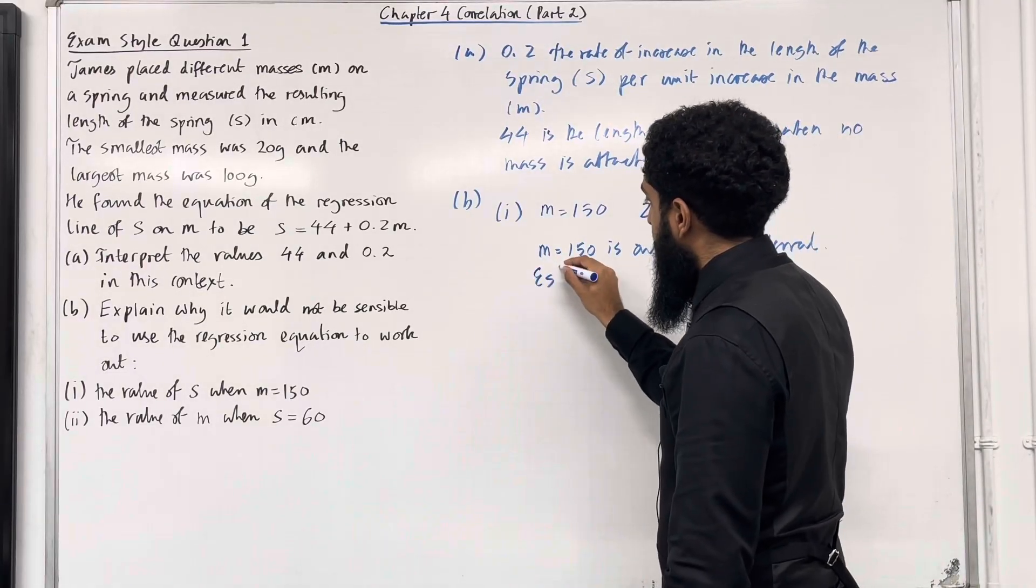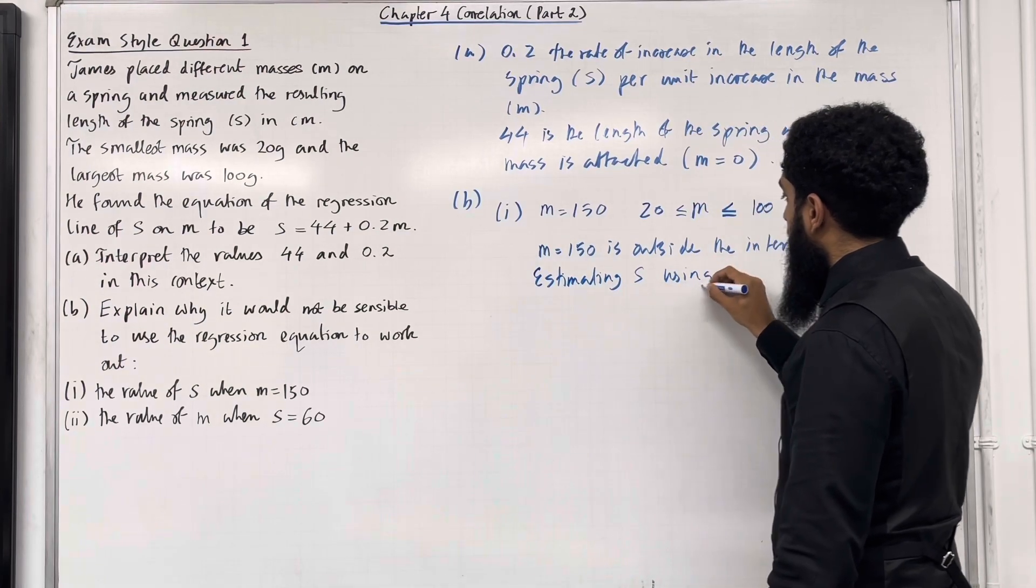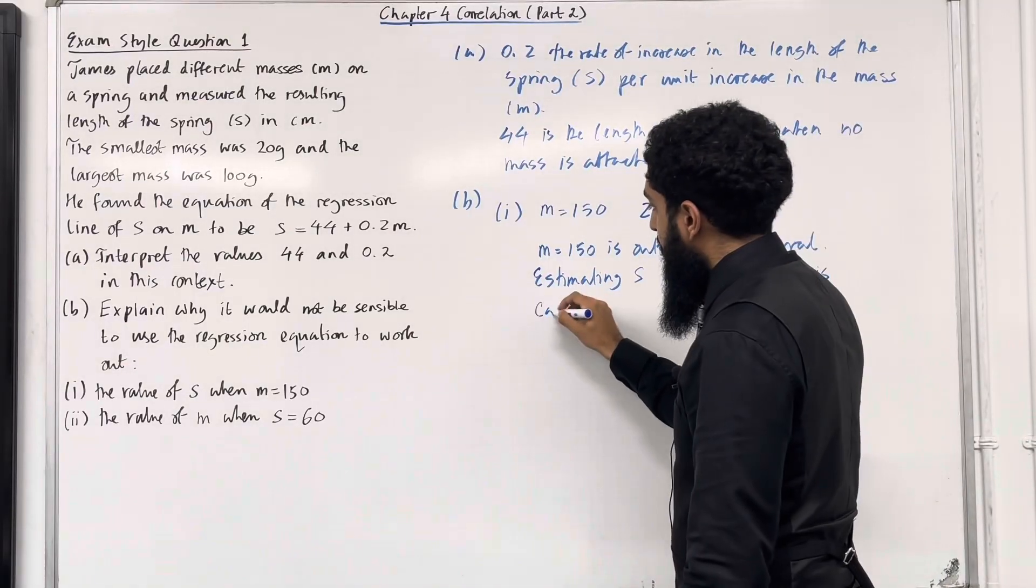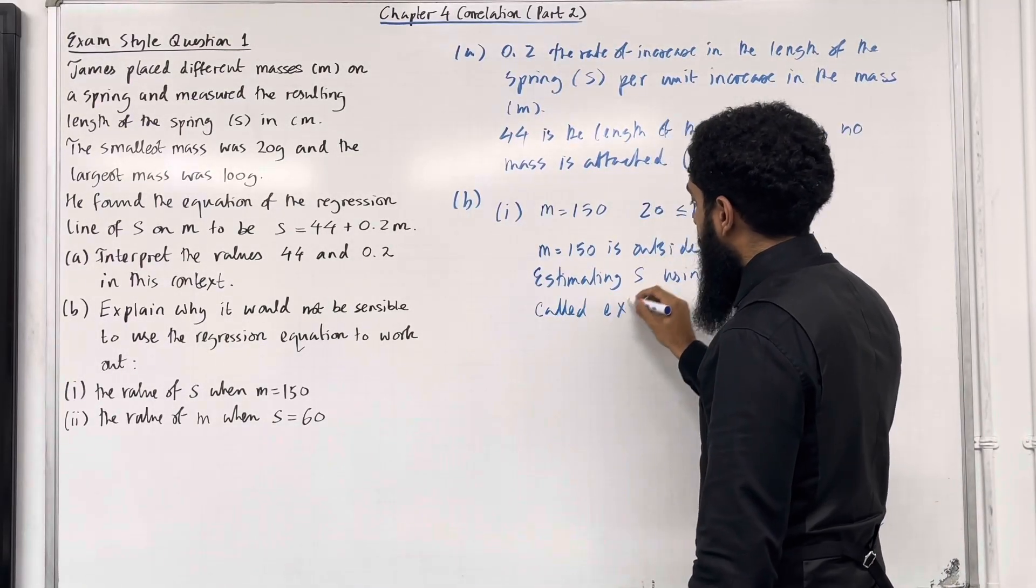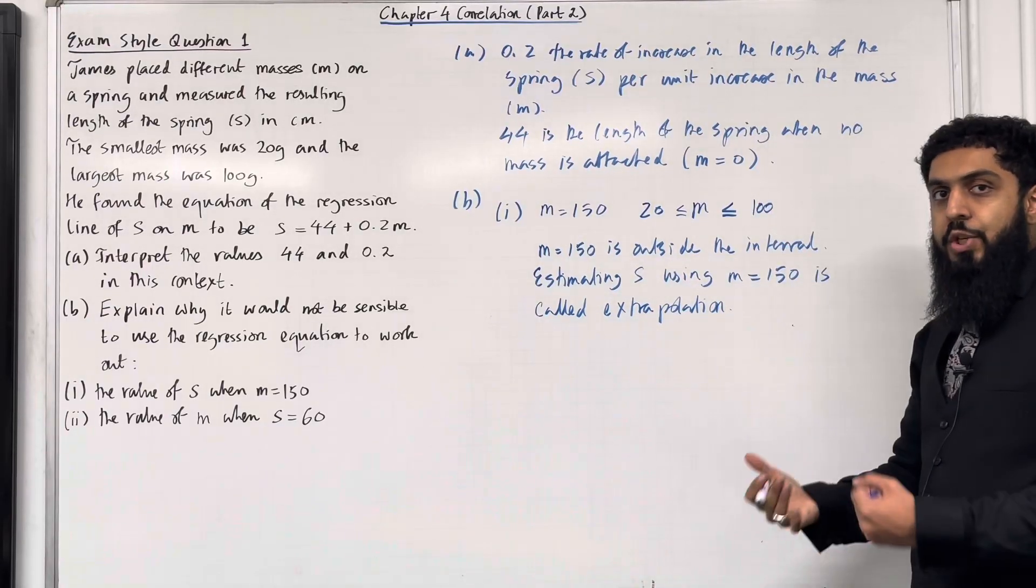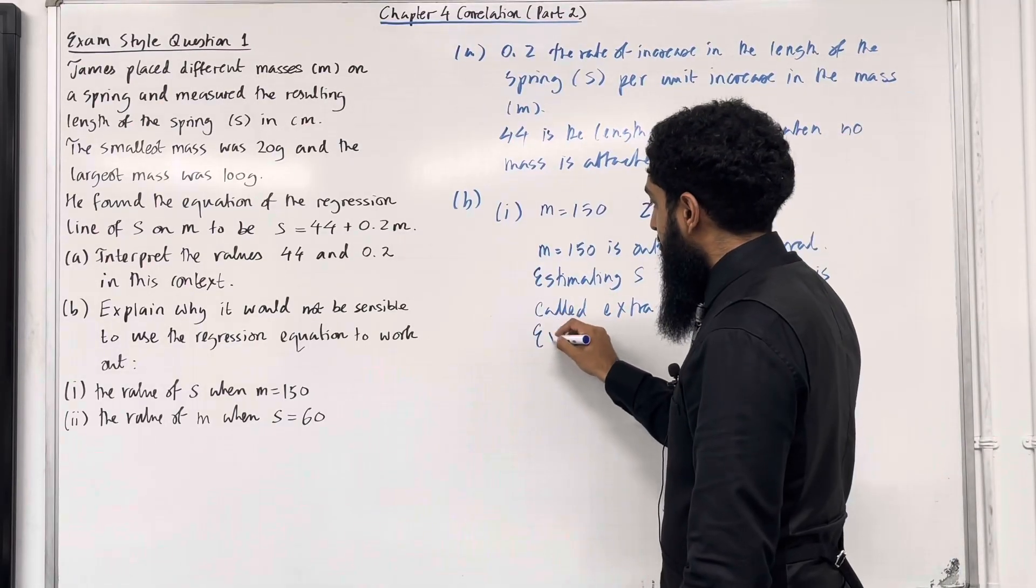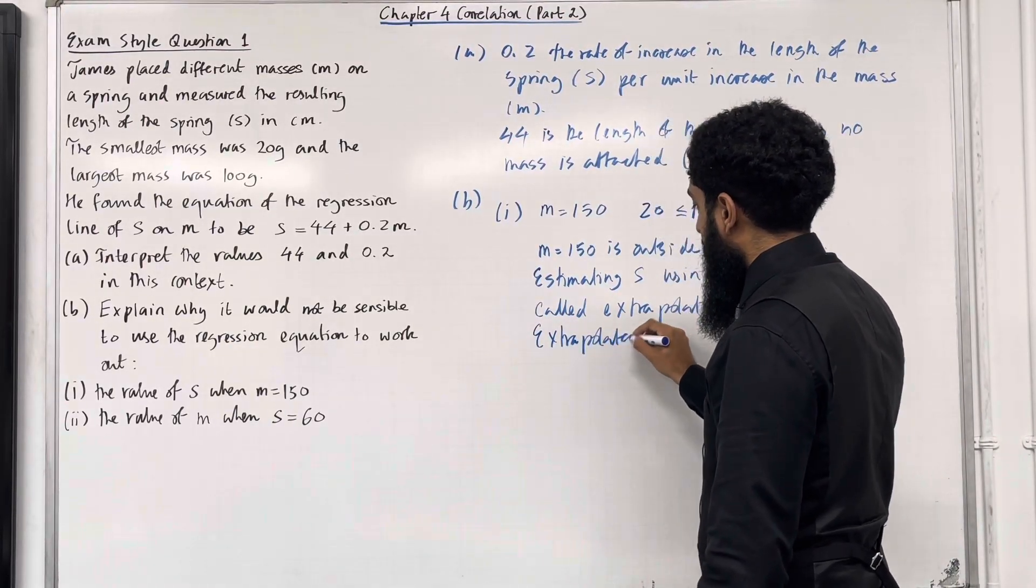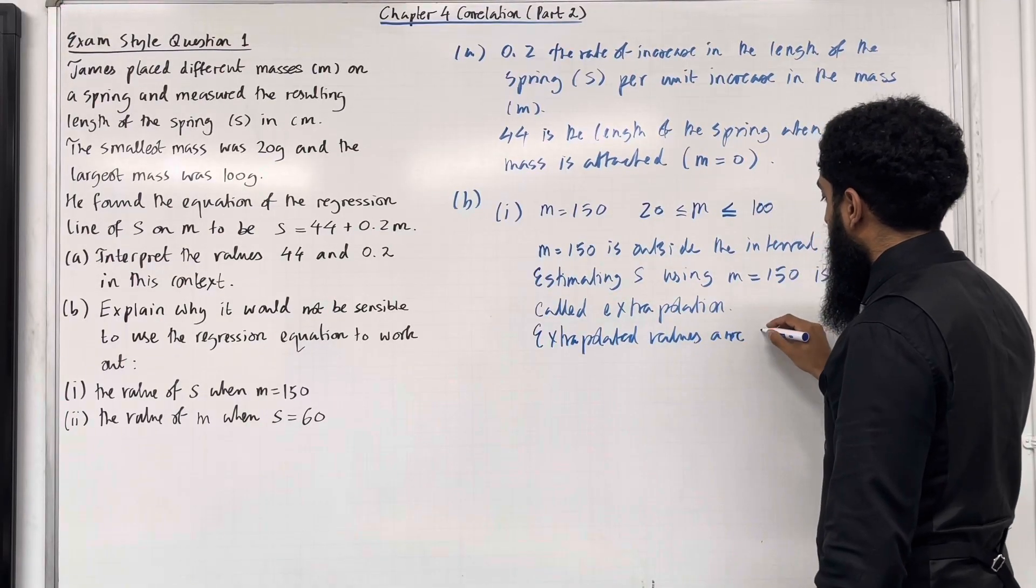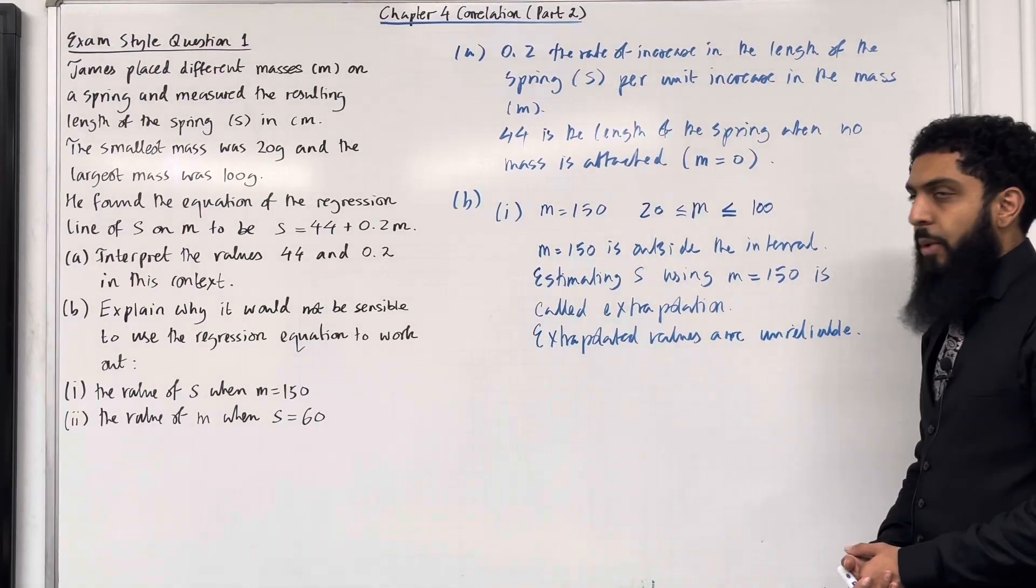Estimating s using m = 150 is called extrapolation. We know that extrapolated values are unreliable. So that completes part B, part 1.